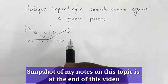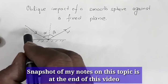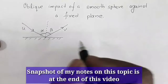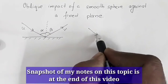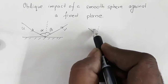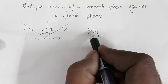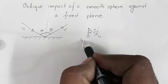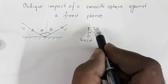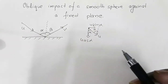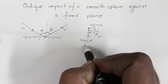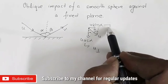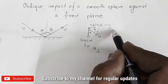For the incoming sphere I can redraw this diagram — this is u and this angle is alpha, so this angle will also be alpha. This gives u cos alpha as the component of u perpendicular to the surface, and u sin alpha as the component of u parallel to the surface.